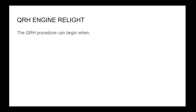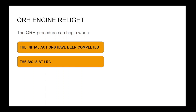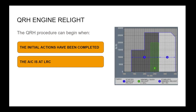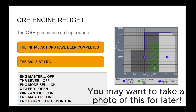The QRH procedure can begin when the initial actions have been completed and the aircraft is at the long-range cruise altitude for one engine inoperative. The QRH starts with a diagram showing what kind of engine relight you will have — this is more for crew awareness and does not change the kind of procedure you do. The second part of the QRH procedure is a checklist to relight the engine. It is a read-and-do by the pilot monitoring, except for thrust lever management, which is done by the pilot flying.